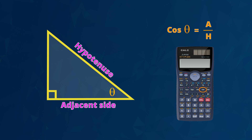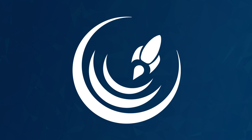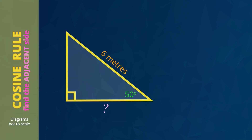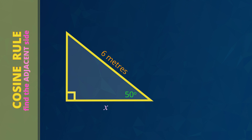Now we're ready to see examples of how the cos rule is used. In this first example we will calculate the horizontal length of this part of the roller coaster. It's the adjacent side that we mark with an X. The two things we already know are the size of this angle of 50 degrees and the length of this hypotenuse of 6 meters. Notice that all the important parts are cozy around the corner angle — cos is cozy around the corner.